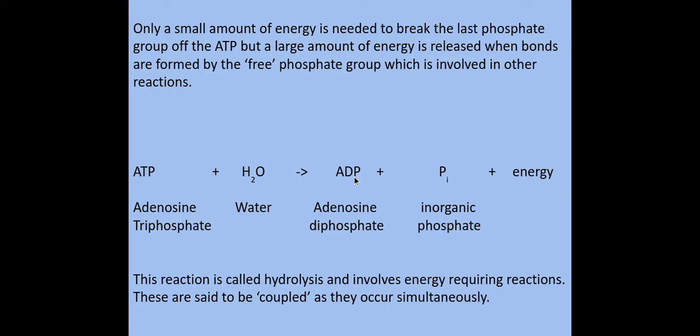ADP can be broken down further into adenosine monophosphate — mono meaning one phosphate — through the removal of another phosphate in a further hydrolysis reaction. However, normally it's just ATP into ADP, and the hydrolysis of this creates a lot of energy which is used to do various things within the body, such as muscle contraction or active transport.